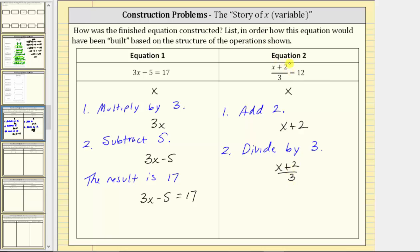And our equation is the quantity (x + 2) / 3 = 12. So we know the result is 12, which gives us our final equation, (x + 2) / 3 = 12. I hope you found this helpful.